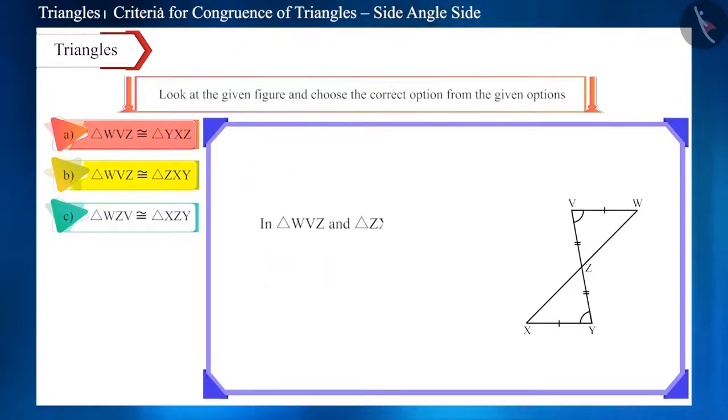Now, let's move to the second option. Here, according to the name of the triangles, is side WV equal to side ZX? No. Therefore, this option is also incorrect.